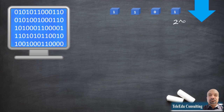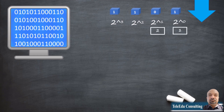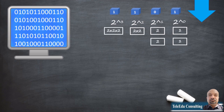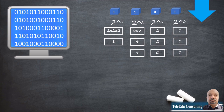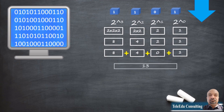The rightmost position is represented by base 2 to the power 0, the second right as 2 to the power 1, the third right as 2 to the power 2, and so on. The resultant value of the binary combination 1 1 0 1 is worked out in the same manner as the decimal system. After getting the respective base 2 values for each bit position, we multiply by the bit value at that position and add all of them together to get the equivalent decimal value. So the binary number 1 1 0 1 represents the decimal equivalent 13.